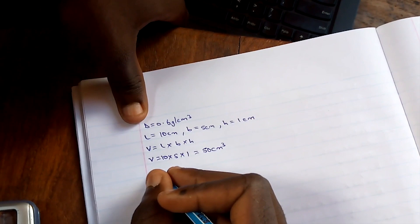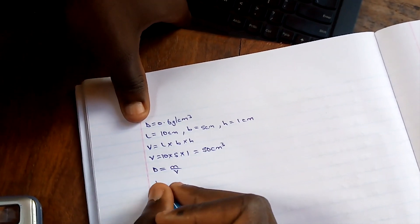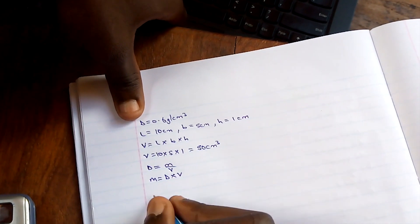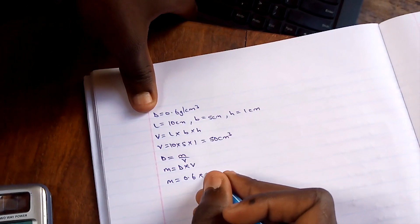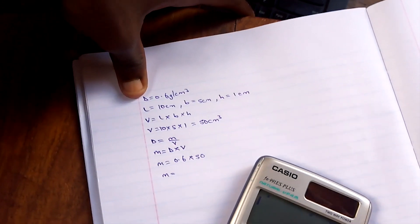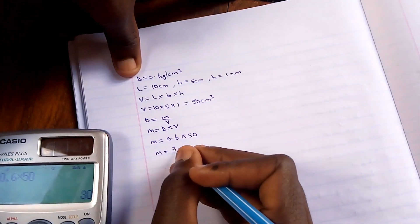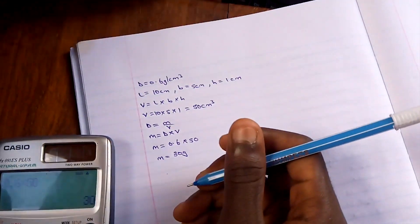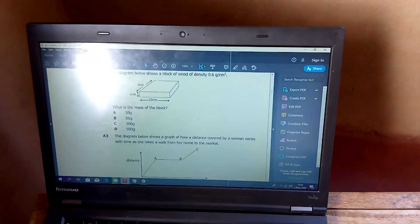Then the mass, the density is equal to mass over volume. So the mass is going to be density times volume. So the mass is equal to 0.6 times 50, which is 30 grams. That's question 2. The answer is A, 30 grams.